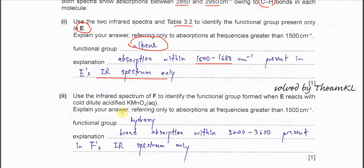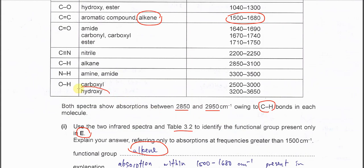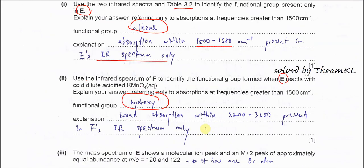Use IR spectrum of F to identify the functional group formed when E reacts with cold dilute acidified KMnO4. So we know that it's a hydroxy functional group. Again, must choose from here: hydroxy. Explanation: a broad absorption within 3200 to 3650, present in the IR for the F only.